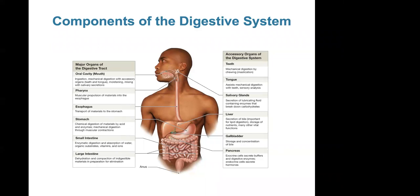In the small intestines, digestion continues in the first part through enzymatic digestion, followed by absorption of water, organic substances, vitamins, and ions. In the large intestines, there is no further digestion or nutrient absorption. The only thing absorbed there is water, and this involves dehydration and compaction of indigestible materials — essentially waste — in preparation for elimination from the body.